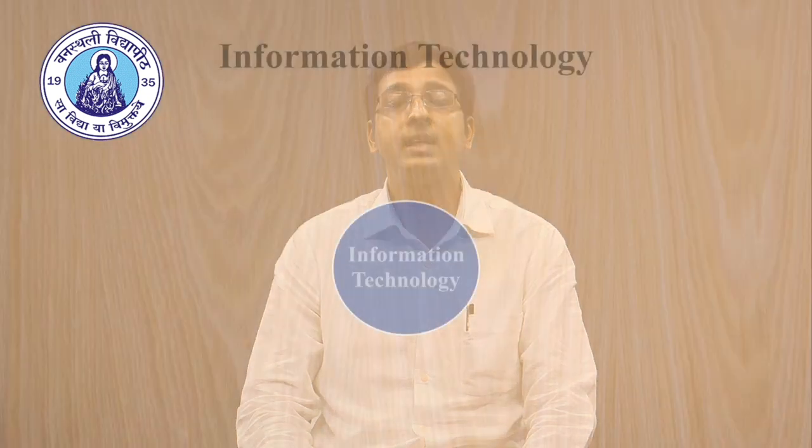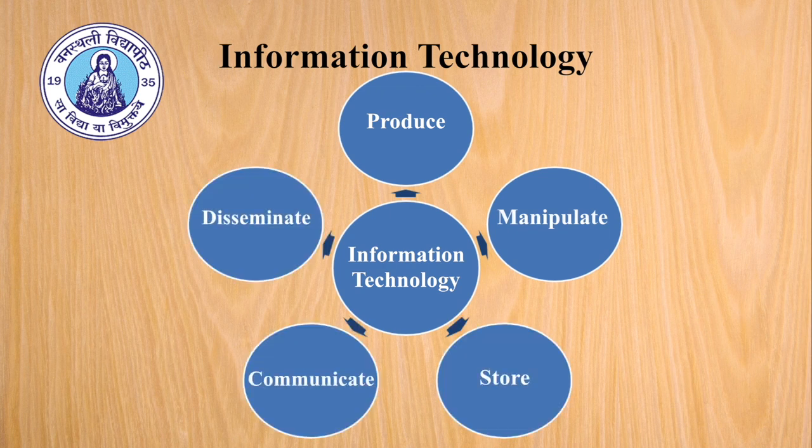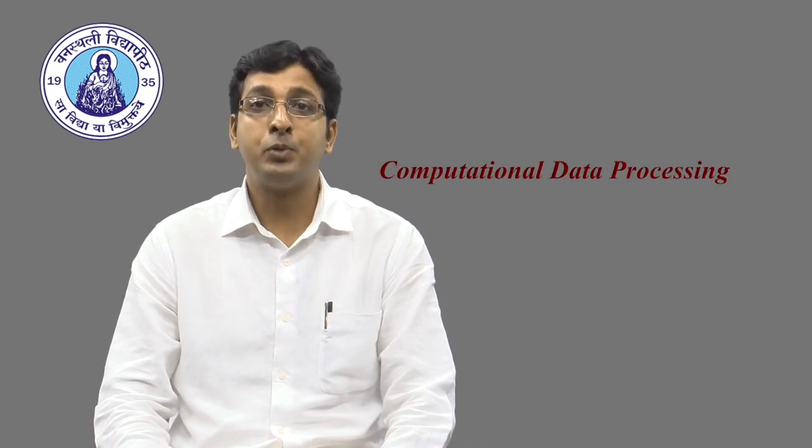Moving on to the first topic of the module: What is information technology? Information technology, commonly called IT, is a general term that describes any technology that helps to produce, manipulate, store, communicate, and disseminate information. In fact, a 1958 article in Harvard Business Review referred to information technology as consisting of three basic parts: computational data processing, decision support, and business software. This time period marked the beginning of IT as an officially defined area of business.